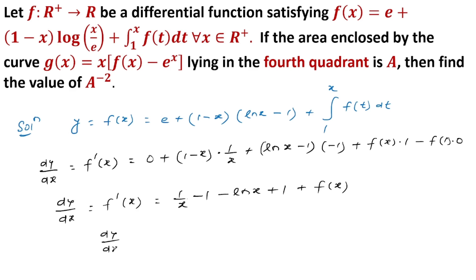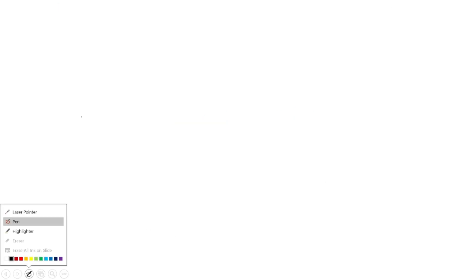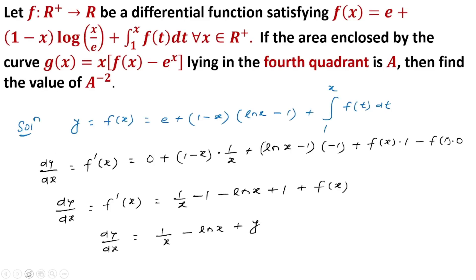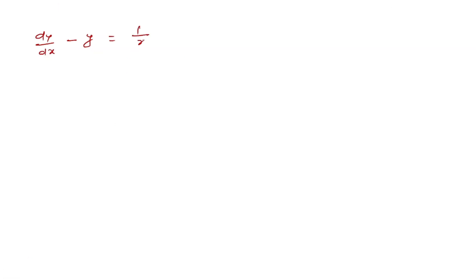So dy/dx equals 1/x — the ones cancel — minus ln x plus f(x), which can be written as y. Rearranging, the equation becomes dy/dx minus y = 1/x - ln x. This is of the form dy/dx + P·y = Q, where Q is a function of x.